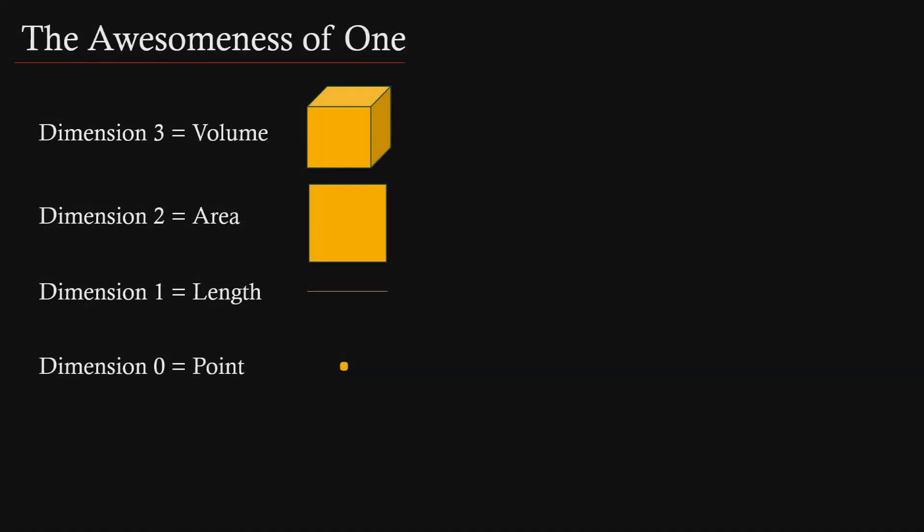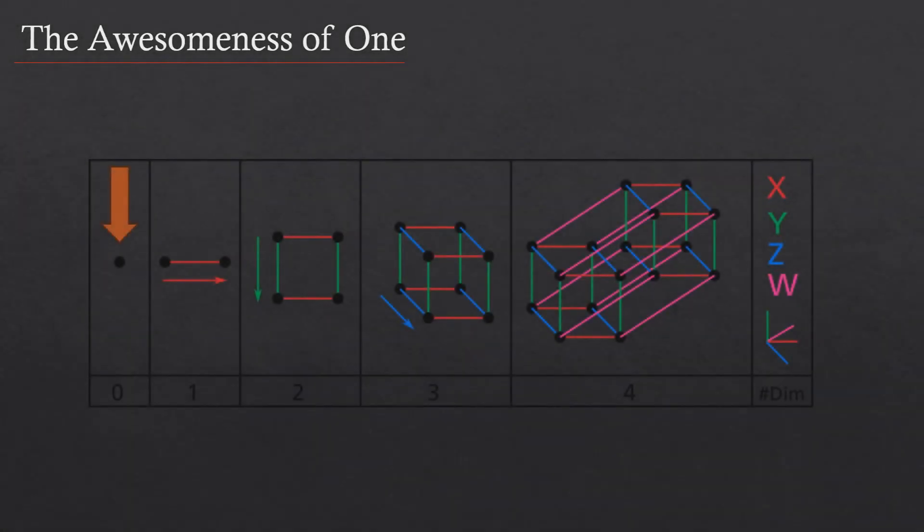These are the typical shapes we use to illustrate dimensions 0 through 3: a point, a line, a square, and a cube respectively.